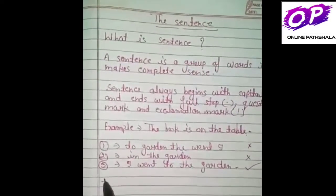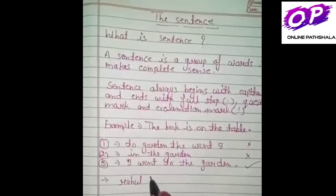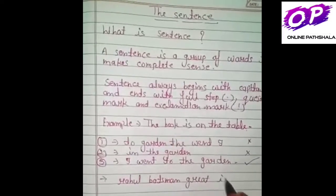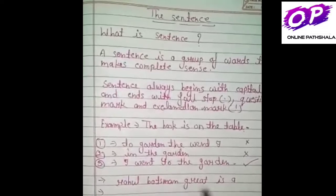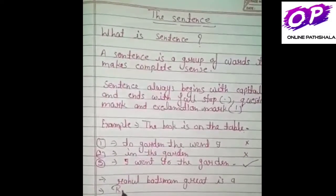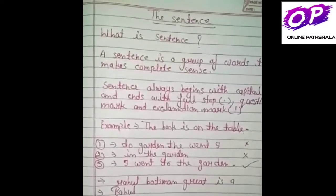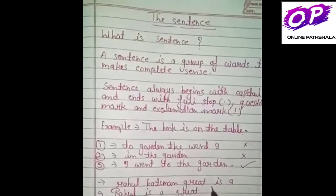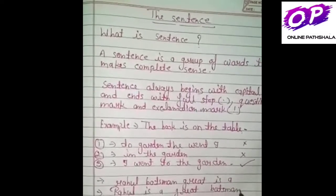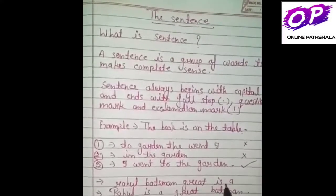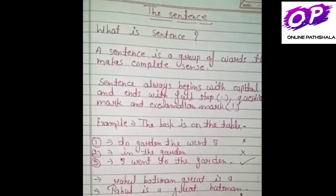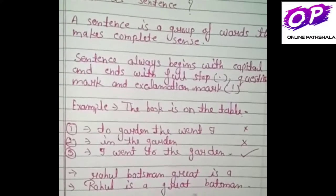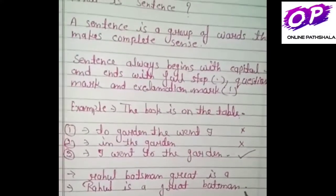एक और example देखते हैं। राहूल, बैट्समैन, great, is a — अब इन words को हम rearrange करके एक sentence बनाएंगे। सबसे पहले subject लिखा — 'Rahul' — first letter capital में। उसके बाद 'is a great batsman.' यदि हमने इन words को rearrange करके सही तरीके से लिखा, तो इसका एक meaning निकलता है। 'Rahul is a great batsman.' यह एक complete sentence कहलाएगा।